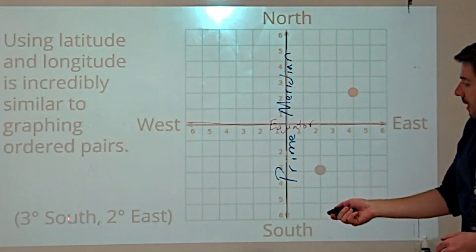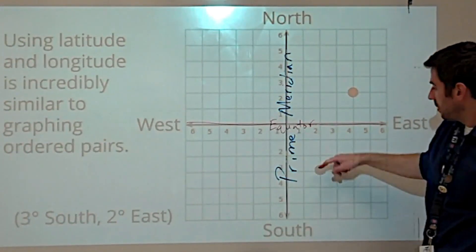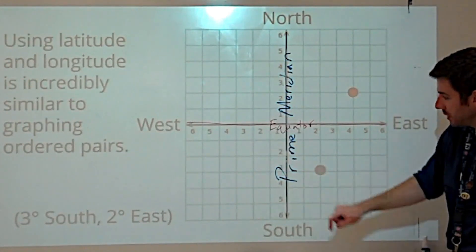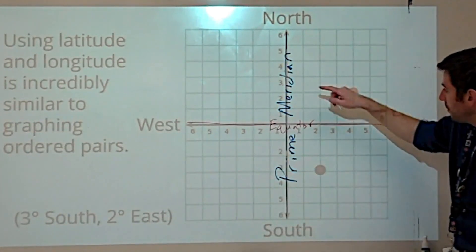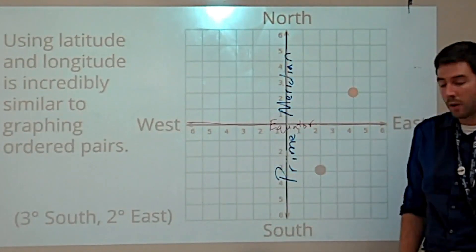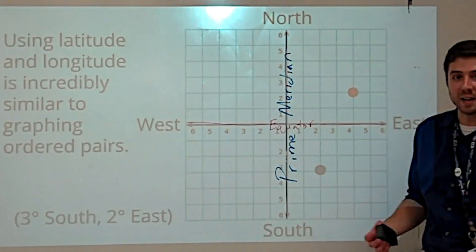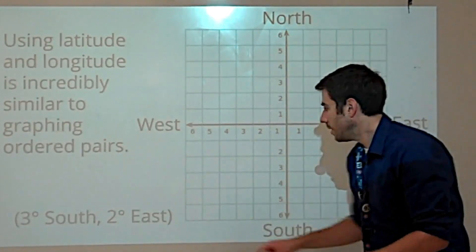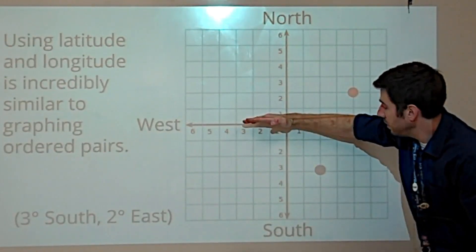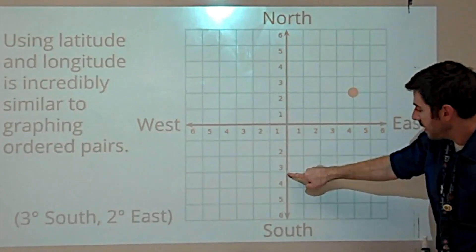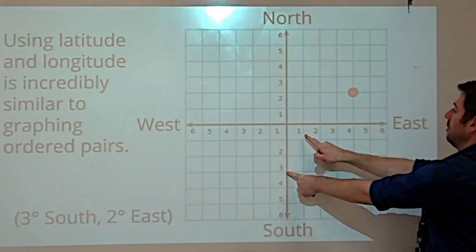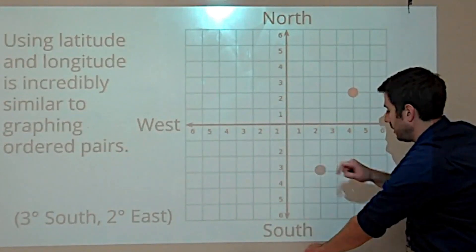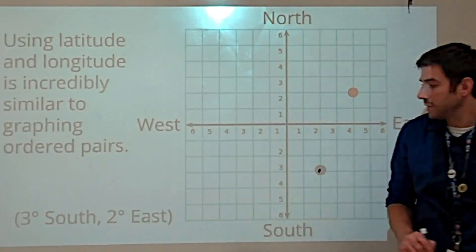The point right here would be the blue dot. Three degrees south of the equator — one, two, three degrees south — and two degrees east of the prime meridian. The prime meridian and equator labels are kind of getting in the way here, so still imagine that they're there. Three degrees south is there. Two degrees east of the prime meridian would be there. Trace those lines until they intersect, and it's right there at the coordinate: three degrees south, two degrees east.